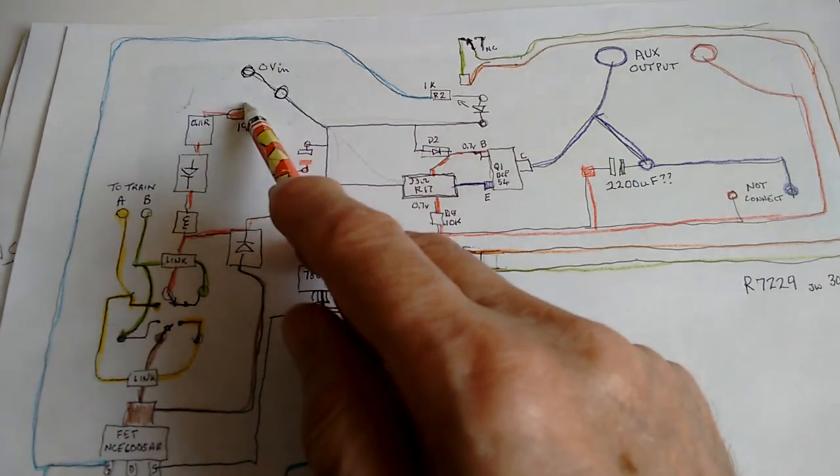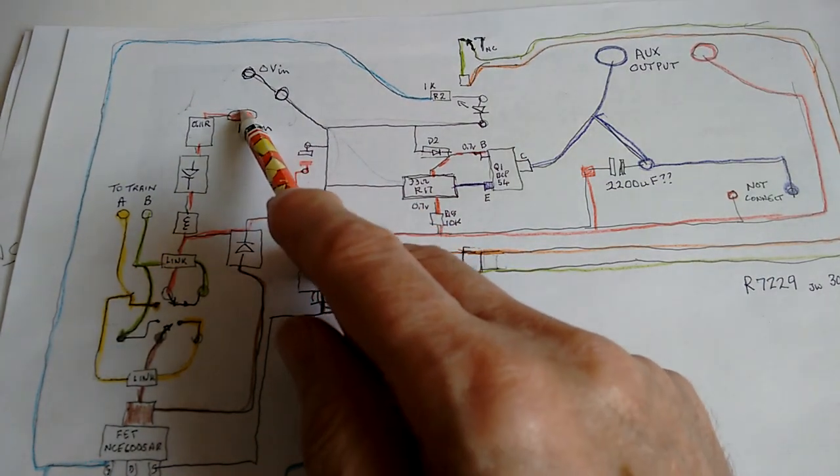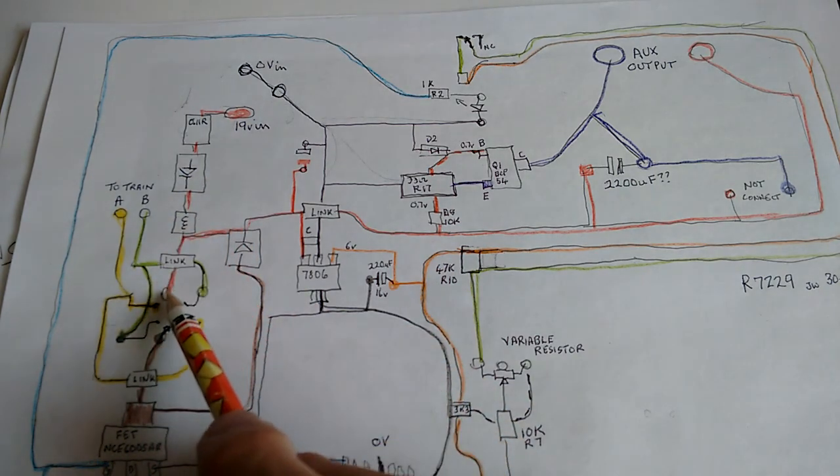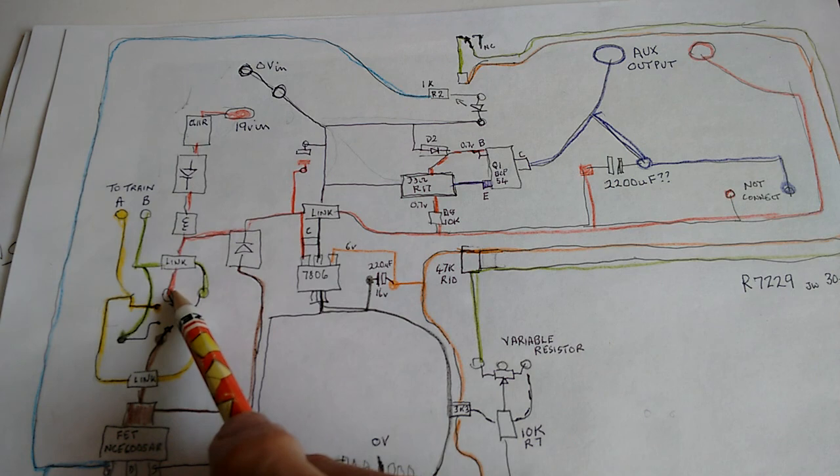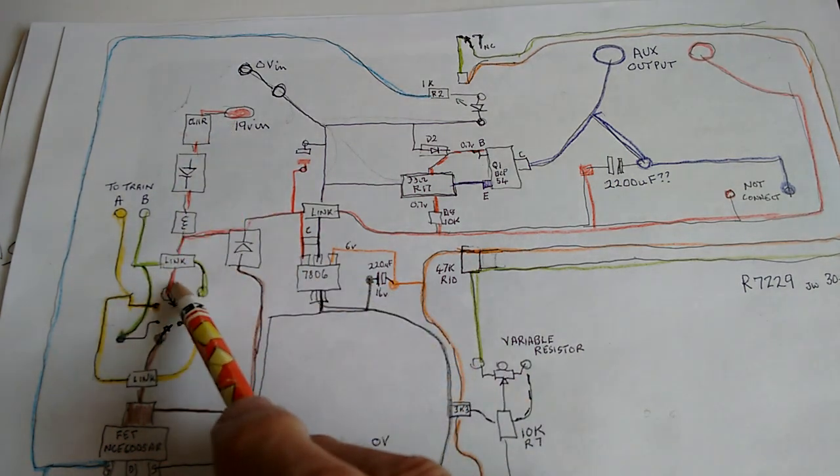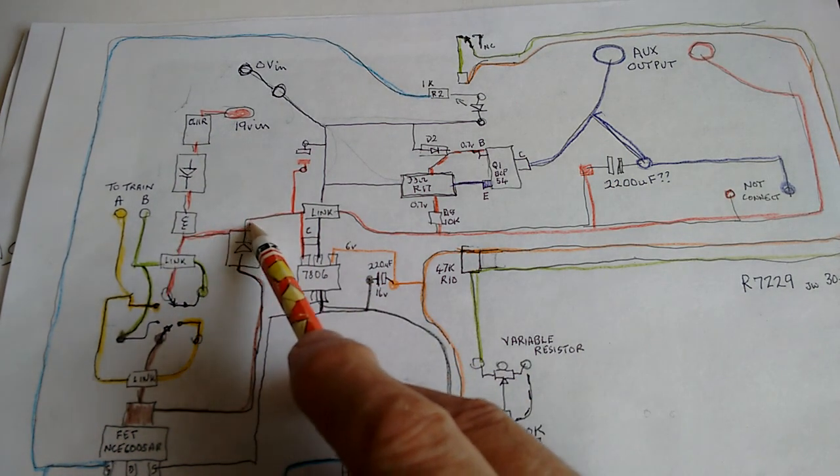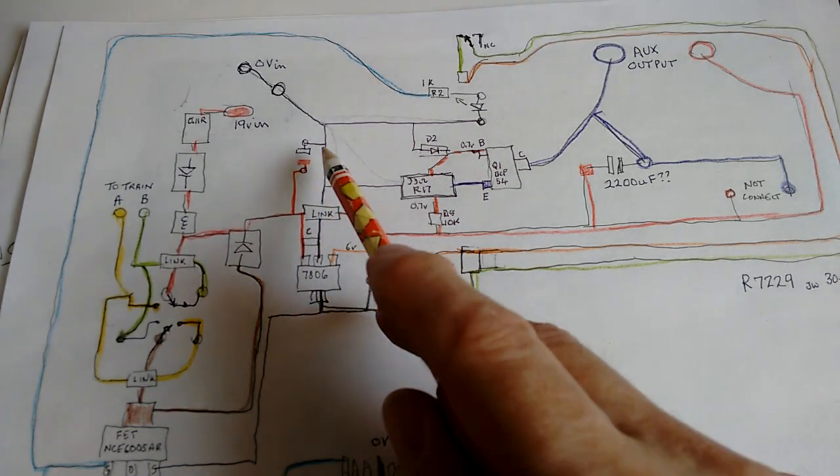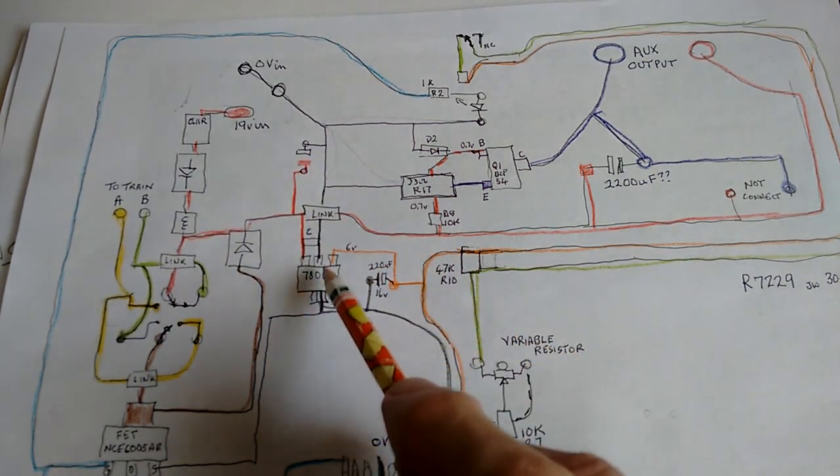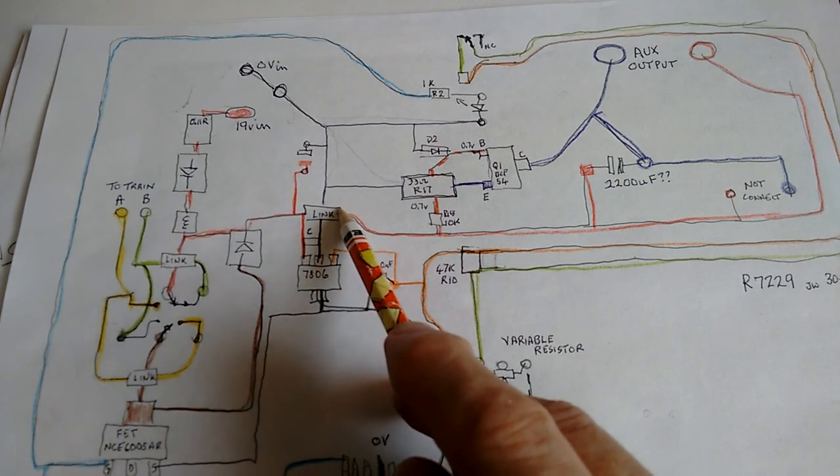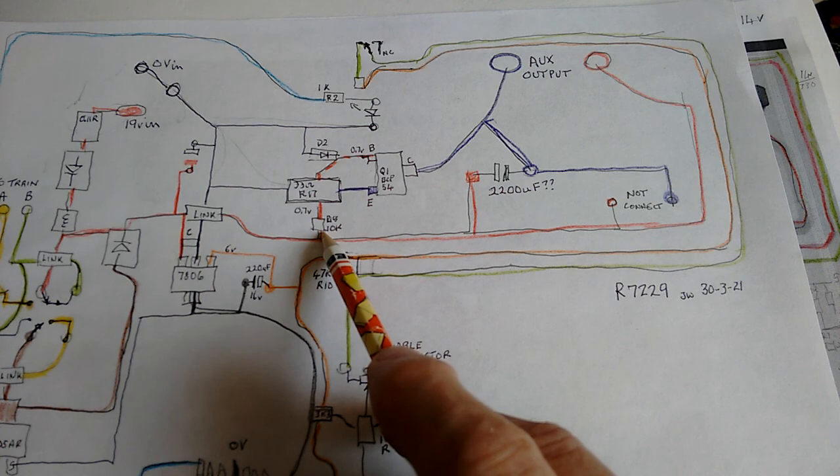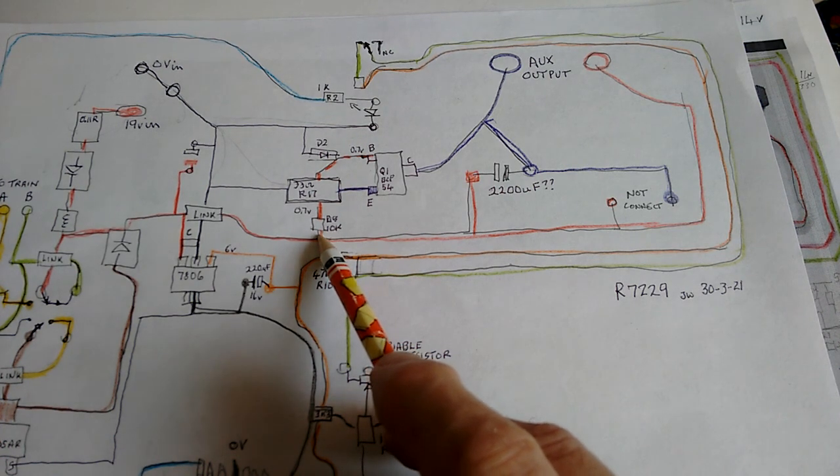Anyway, if we put a voltmeter across there, we should get something like 19 volts. If we take anywhere else on the red, so down here to the changeover switch, we should still have a reasonable voltage all the way along here. This is just the link so that the 0 volts can get down here. So that just goes over and it comes along to the end. Here again, we should have the 19 volts.